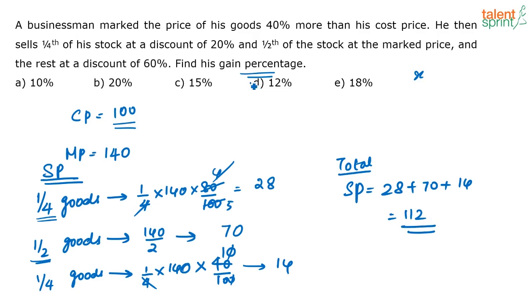Goods worth 100 rupees are finally sold for 112 rupees, so the profit percentage is 12% — that is option D. You don't need to write every step; just write the required ones. Most importantly, take assumed values — don't take cost price as x. Converting percentages to fractions also makes calculations easier.